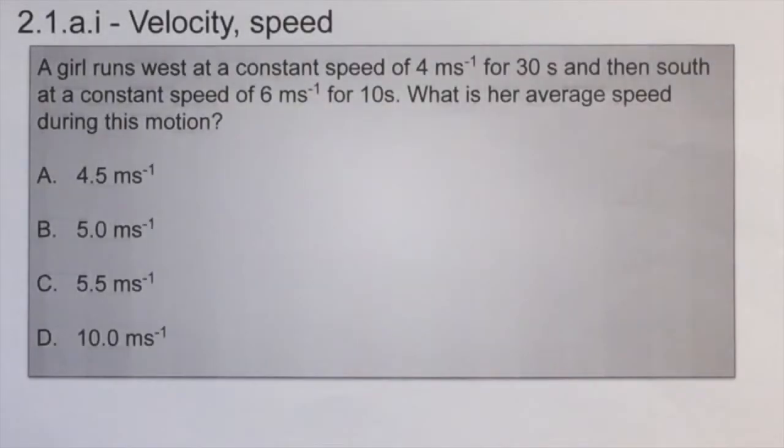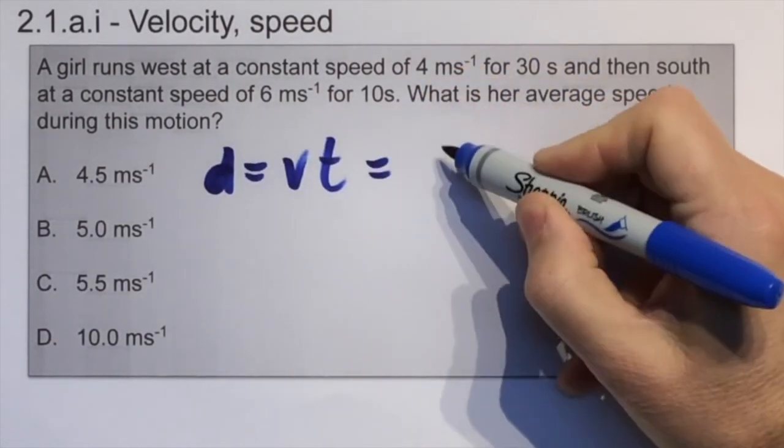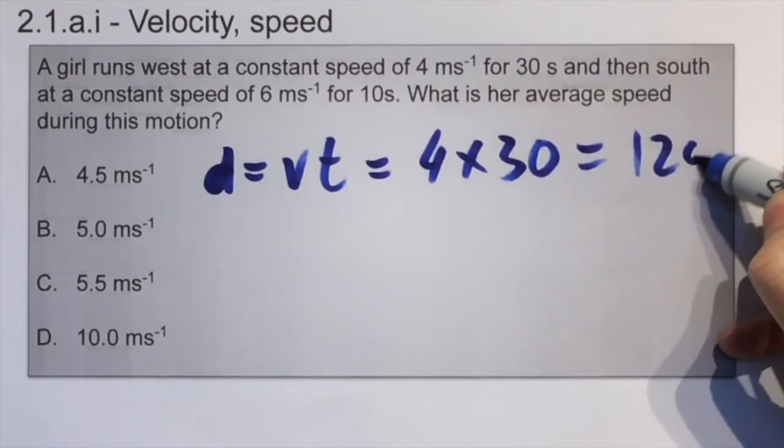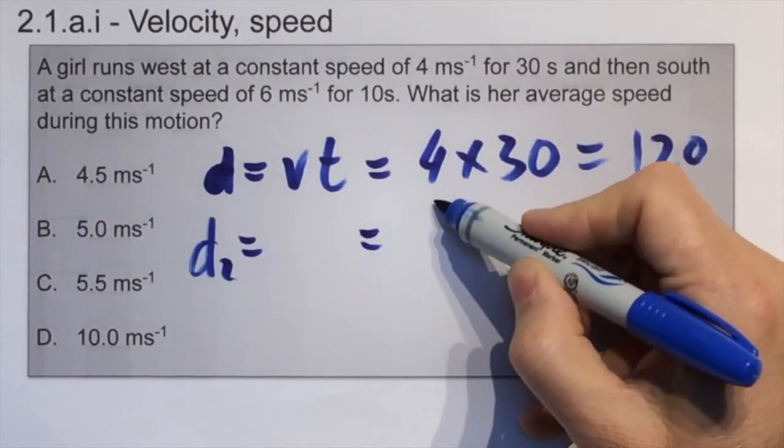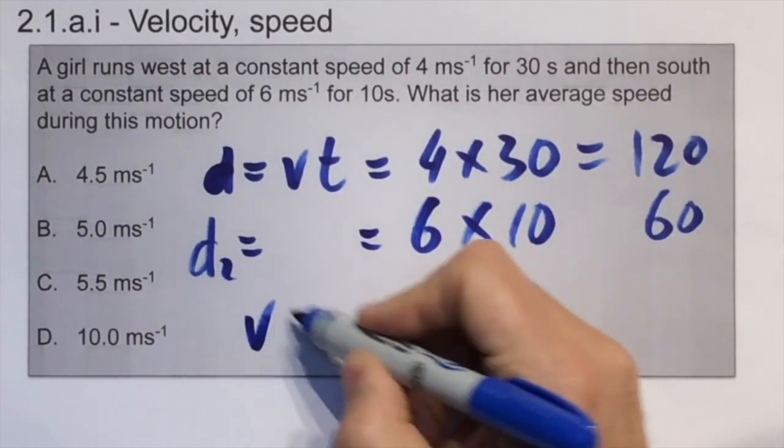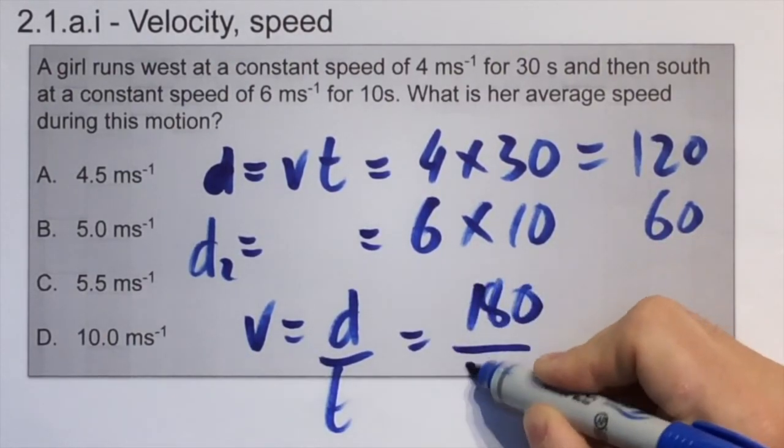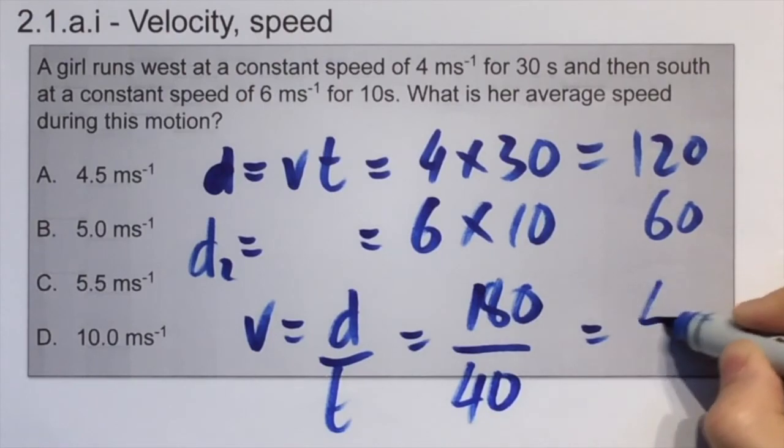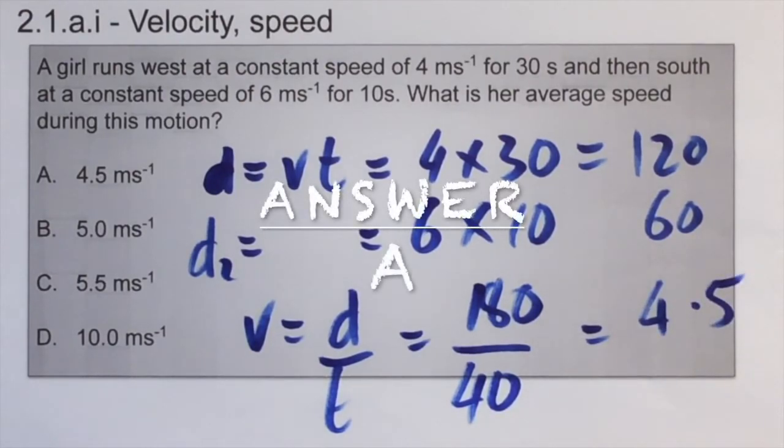This question is measuring average speed, so the direction is not important. We consider it in two stages. The first one, d equals vt, tells us the distance travelled, and that becomes 120 metres. The second stage, in a different direction, becomes 60 metres. So the total distance travelled is 180 metres. That's in 40 seconds. We add the two times together, and that calculates as 4.5 metres per second average speed.